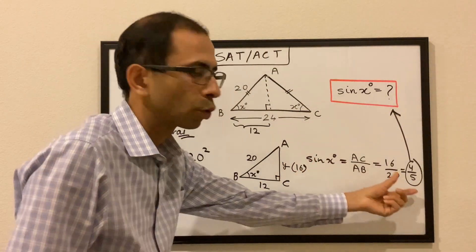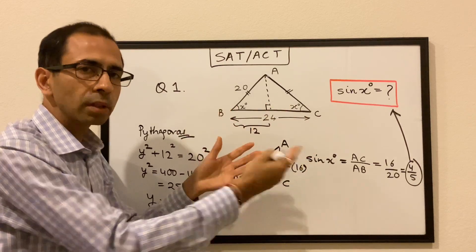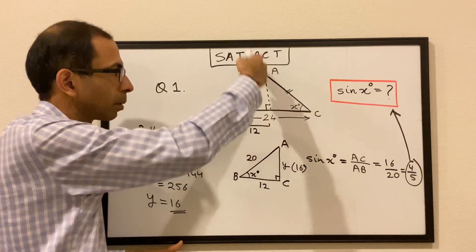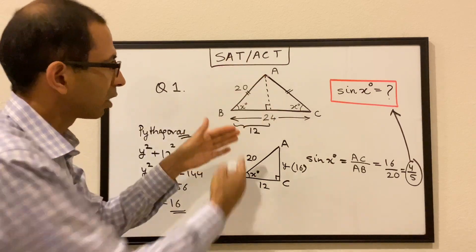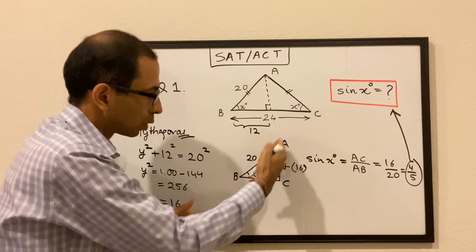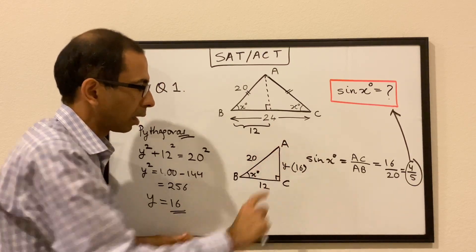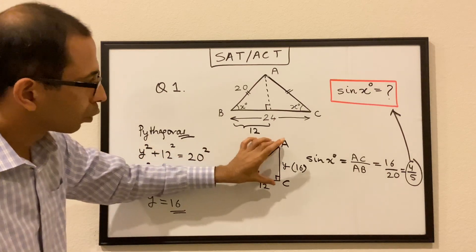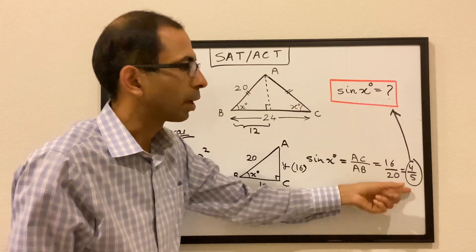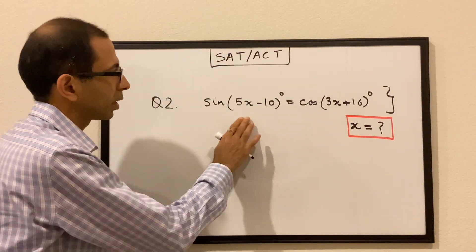So sine of x is 4 over 5. To quickly reiterate: we observe this is an isosceles triangle, so these two sides are equal and these two angles are equal. We drop the perpendicular, which bisects BC into two halves of 12 each. We get a right triangle with sides 12 and 20, use the Pythagorean theorem to find AC = 16, then sine of x = 4 over 5.